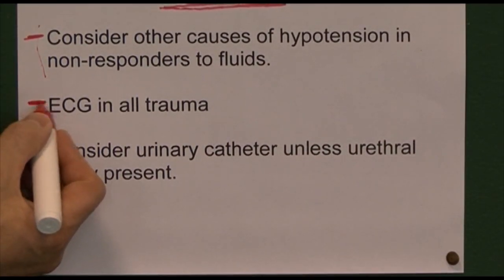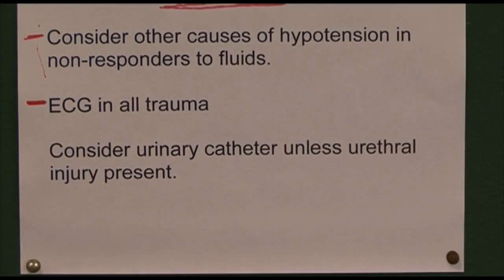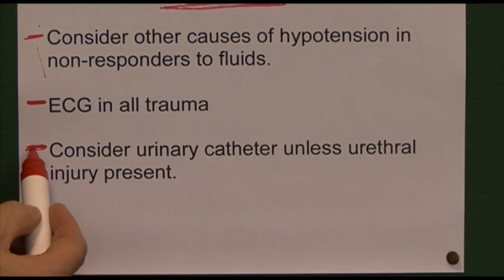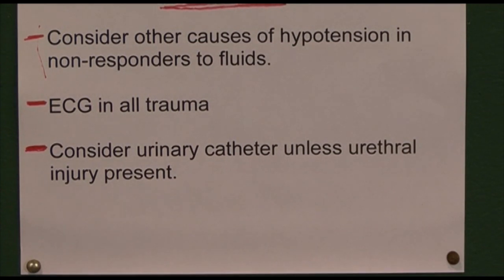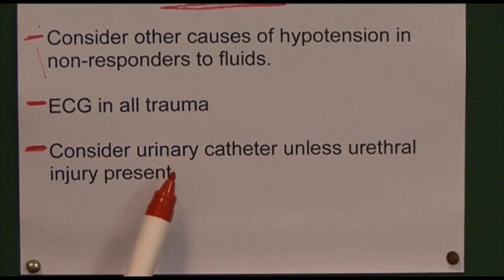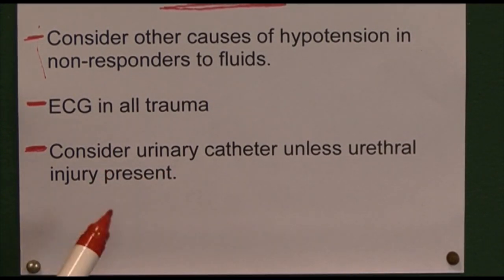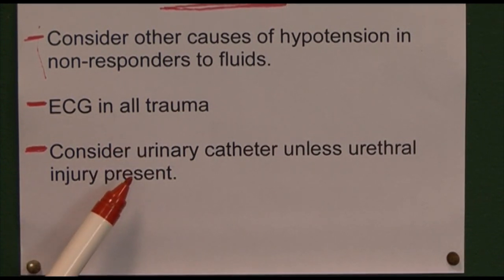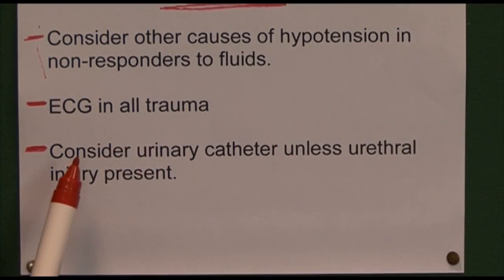We can consider urinary catheters unless there is a urethral injury or other contraindication. In trauma we do like to use urinary catheters — hourly urine volumes are very helpful to titrate intravenous fluids. We're looking for a minimum of 0.5 ml of urine per hour per kilogram of body mass in an adult.